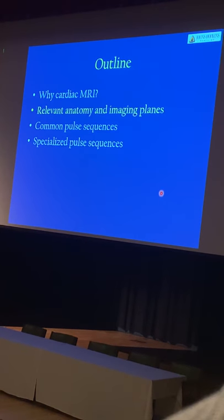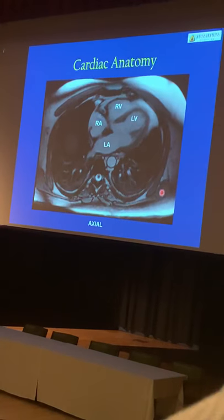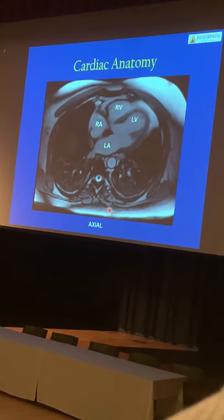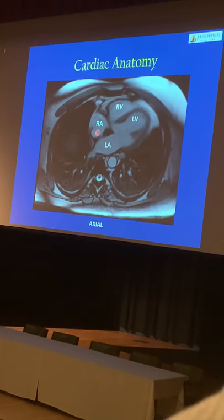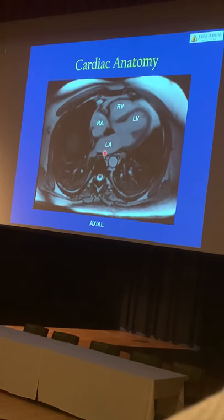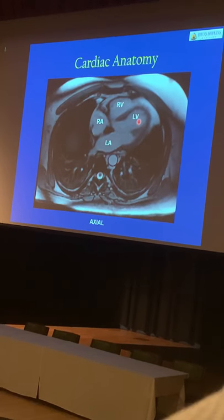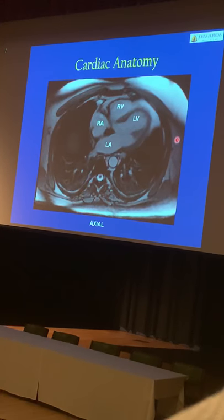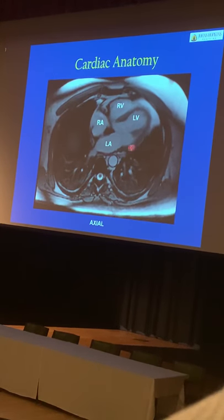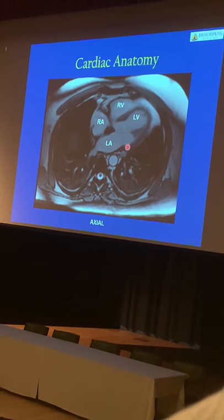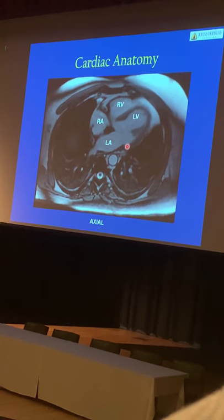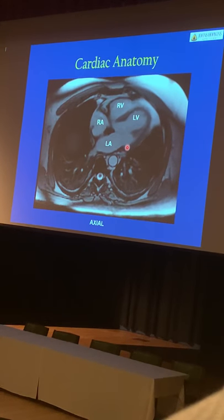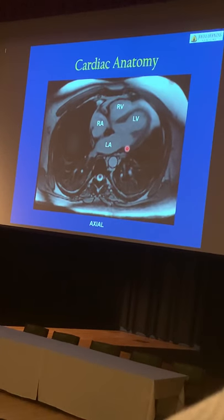Next, we're going to go over some relevant anatomy and imaging planes. When we start off with a scout of the patient in the axial bright blood images, we can see the cardiac chambers — the right atrium, the right ventricle, left atrium, and left ventricle. But because the heart is oriented a little bit obliquely within the chest, you're not perfectly cutting through the heart in a way that you can optimally evaluate the anatomy or the function, so we'll have to get some cardiac-specific planes.